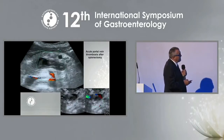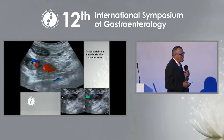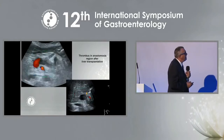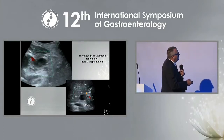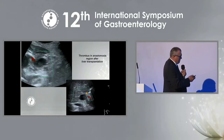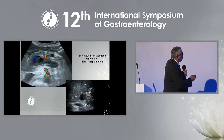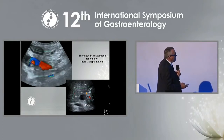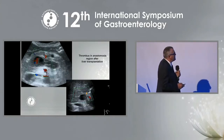Thrombosis after splenectomy occurs frequently due to thrombocytosis that develops after the procedure, combined with reduced portal blood flow. After liver transplantation it is less common but does occur. In this sample, you can see a thrombus at the porto-portal junction where the anastomosis is quite narrow, which is one reason thrombosis develops.